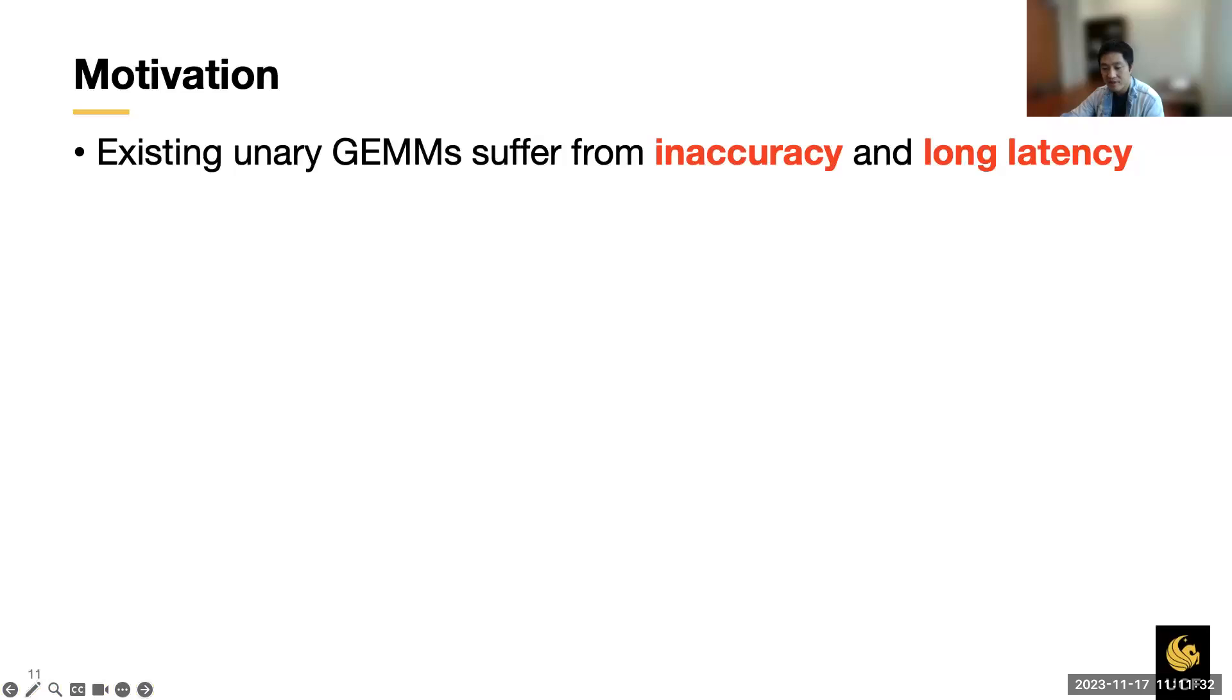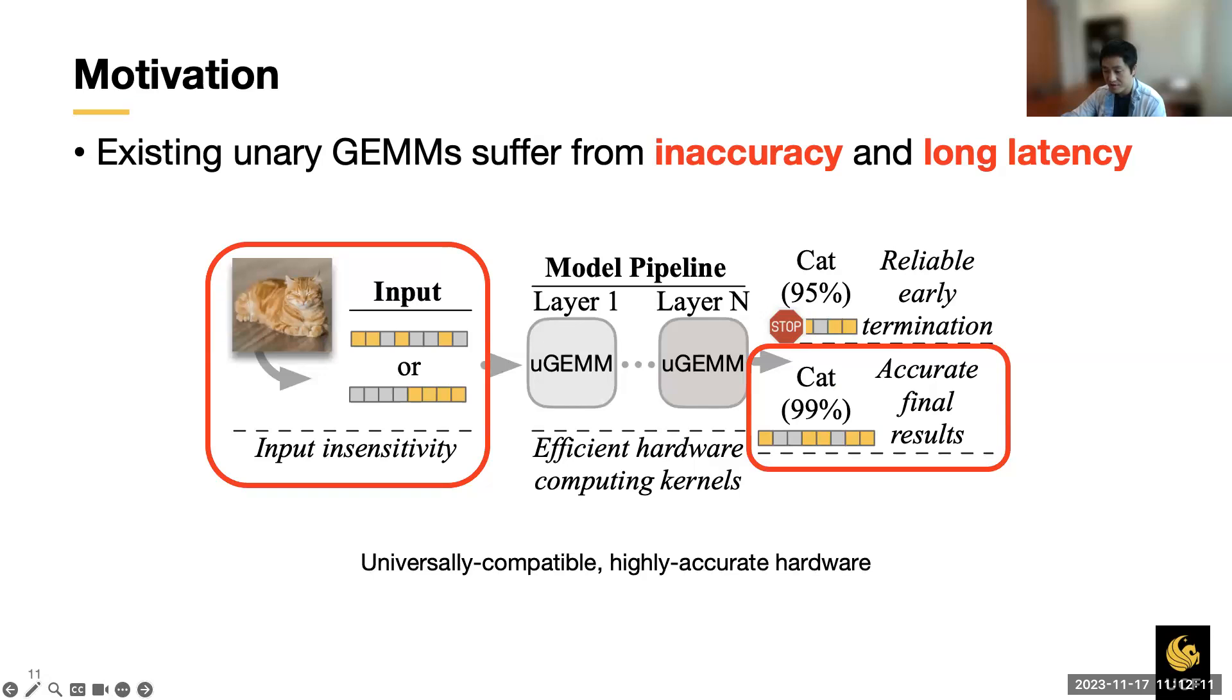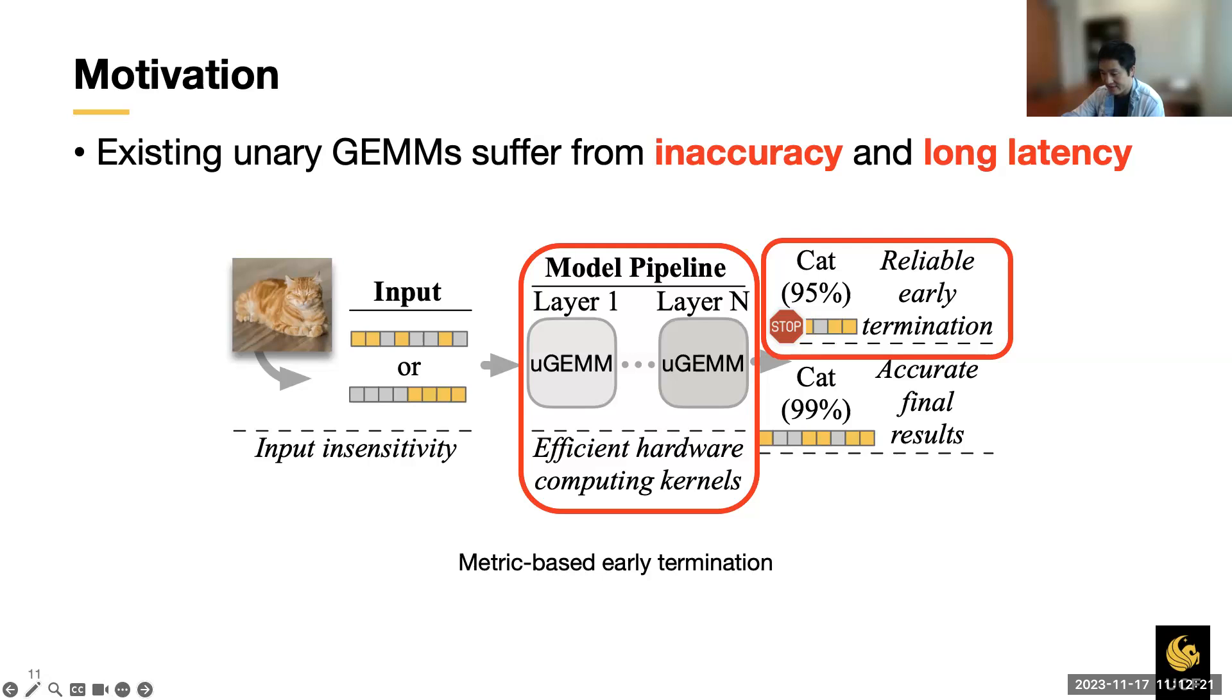Coming to the deep learning era, the general matrix multiplication, for short GEMM, becomes the core operation. As we saw in prior examples, a unary GEMM architecture has a potential to greatly reduce the hardware cost and improve the efficiency of binary hardware. However, this is not an easy task. This work aims to address the two research challenges that have made it very difficult to build efficient unary architecture for GEMM: inaccuracy and long latency. To achieve this, UGEM is designed to be universally compatible to different kinds of input encodings with high accuracy. Then by chaining multiple UGEM blocks together, the latency and efficiency can be significantly improved with the help of early termination without losing too much accuracy.